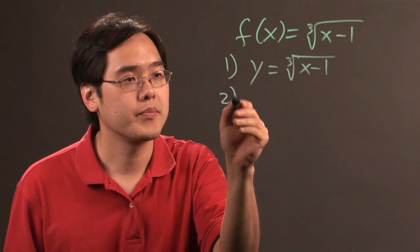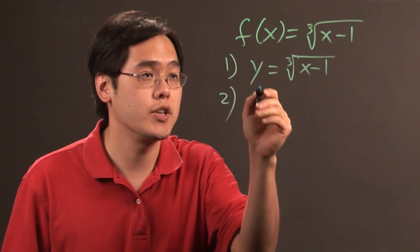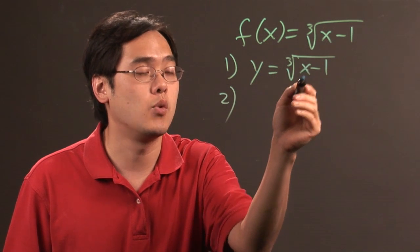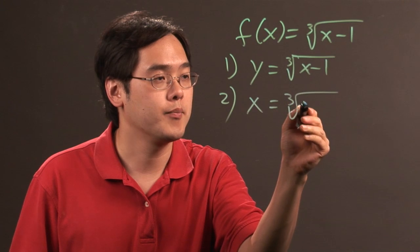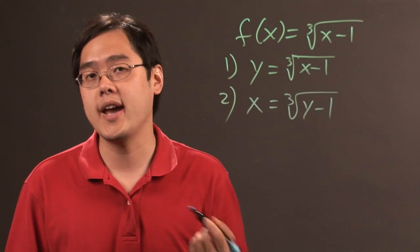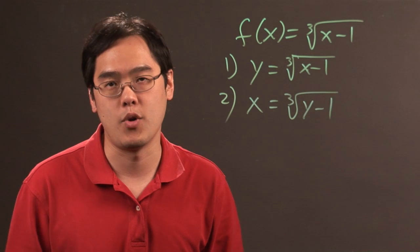The second step is very critical because it allows you to find the inverse formally. You want to switch the places between x and y. So every y you put an x and for every x you put y. So you now have x equals cube root of y minus 1. It's arguably the most pivotal step in the process.